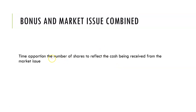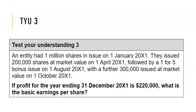So again, what we're doing here is time apportioning — to reflect the cash being received from the market issue. That's normal; we do this weighted average thing anyway. So let's look at the example. An entity had a million shares in issue on the 1st of January X1.